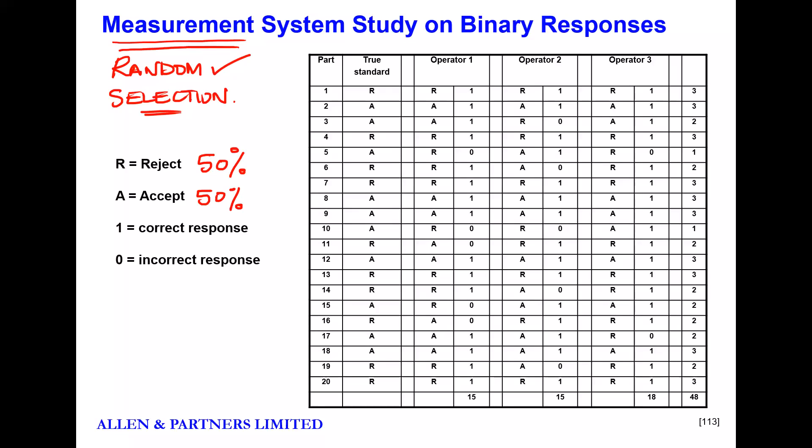The reason for that is because if a mistake is made, we need the mistake to carry the same weight. If we imagine that 18 of 20 parts were acceptable but only two were rejects, if I make one mistake with the two rejects I've got half of them wrong. But if I make a single mistake with the acceptable parts, clearly the percentage of mistake is different. So it's very important that we have 50-50.